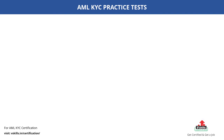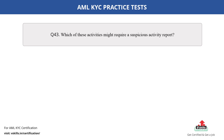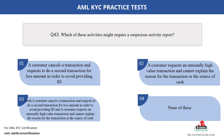Question number 43. Which of these activities might require a suspicious activity report? The options are: A. A customer cancels a transaction and requests to do a second transaction for a lesser amount in order to avoid providing ID; B. A customer requests an unusually high value transaction and cannot explain the reason for the transaction or the source of cash; C. Both A and B; D. None of these. The correct answer is option C.